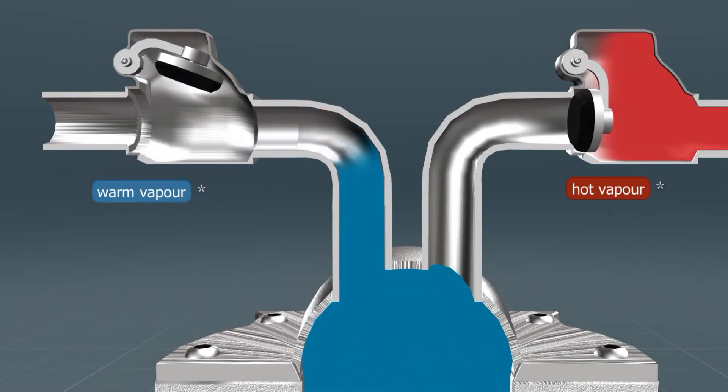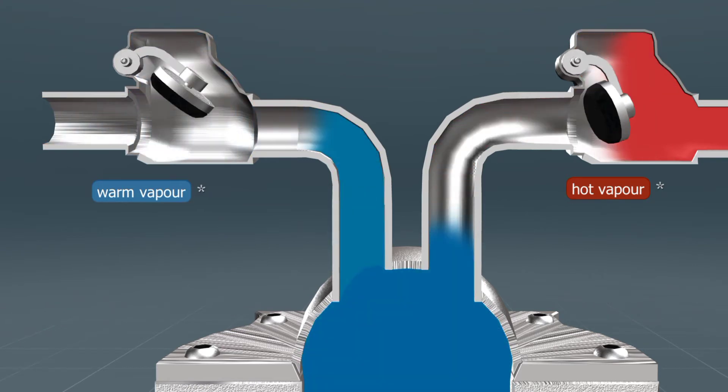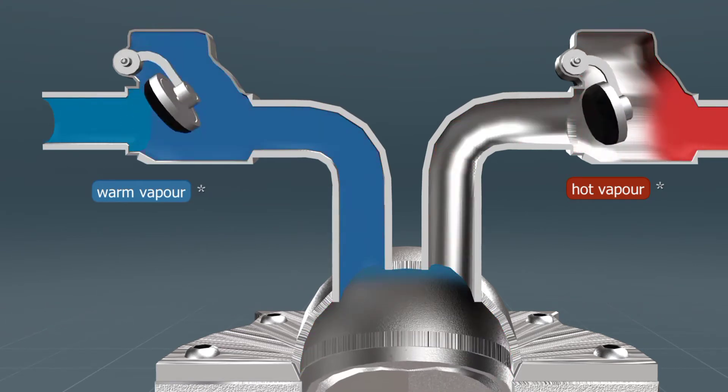The vapor from the food compartment flows into the compressor, which compresses it and causes the pressure and temperature of the vapor to rise.